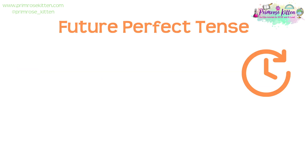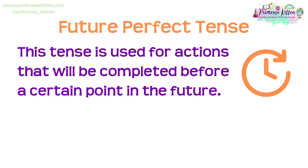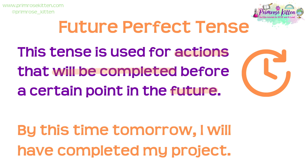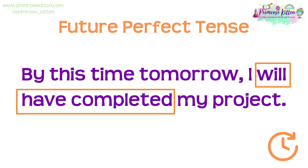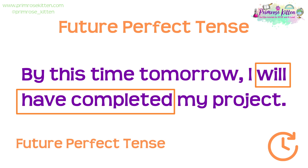Finally, let's jump into the future perfect tense. This tense is used for actions that will be completed before a certain point in the future. For example: 'By this time tomorrow, I will have completed my project.' The phrase 'will have completed' shows that the project will be finished before a specific time in the future — the action isn't done yet, but it will be by tomorrow. The future perfect tense is formed by using 'will have' plus the past participle.